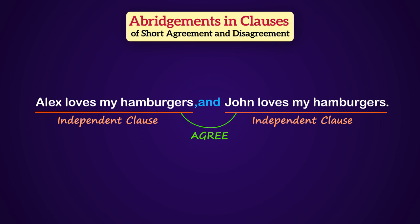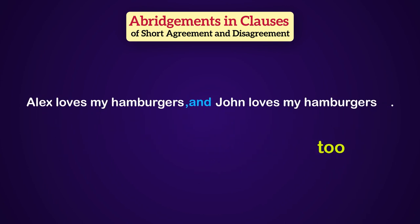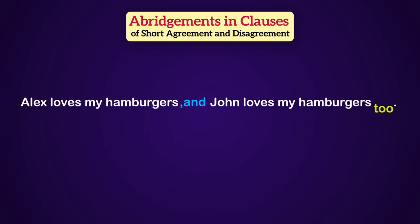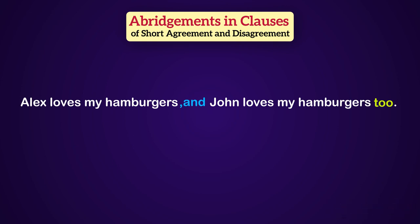This long sentence is grammatically correct, but it doesn't sound natural. To make it sound natural, we can use 'too' at the end of the second clause. 'Too' here means 'also,' and it shows agreement. So: Alex loves my hamburgers, and John loves my hamburgers too.